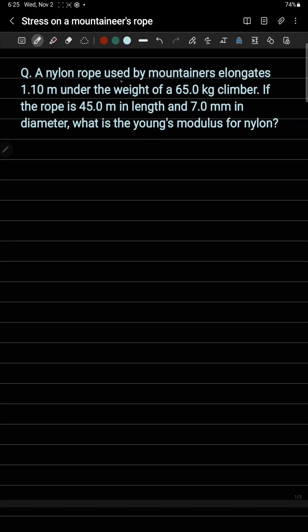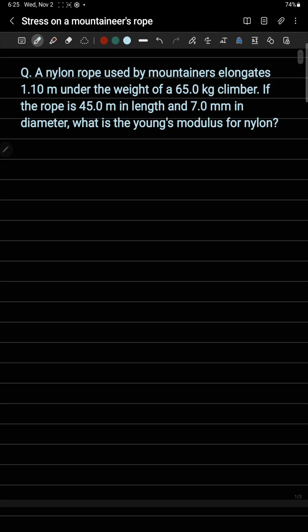A nylon rope used by mountaineers elongates 1.10 meters under the weight of a 65 kilogram climber. If the rope is 45 meters in length and 7 millimeters in diameter, what is the Young's modulus for nylon? So in this problem...